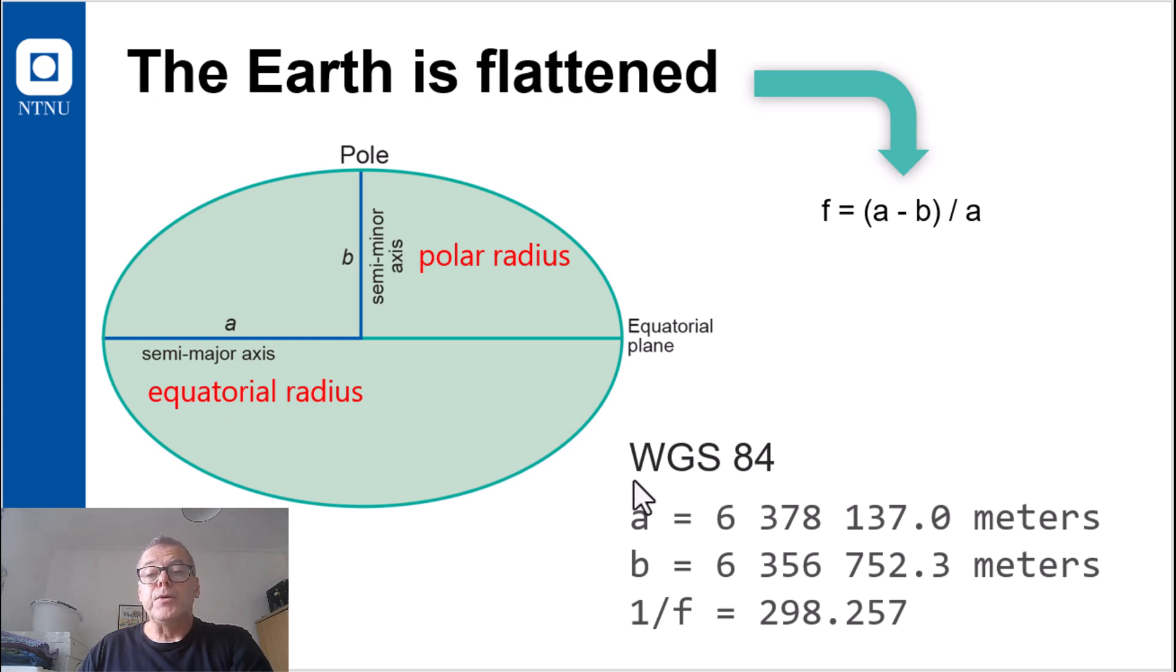And flattening means that the polar radius is slightly shorter than the equatorial radius. For a very well-known and often used ellipsoid called WGS84, the difference between the semi-major and the semi-minor axis is a little bit more than 21 kilometer. So this flattening is then given by the relationship A minus B divided by A. And since this becomes a very little number, it is often denoted as the inverse.